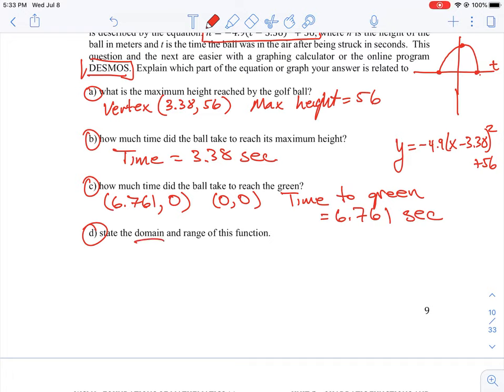We want to state the domain and range of this function. The domain is the values we can use on the x-axis, which is time. We can only really use numbers between zero and 6.76 seconds. If we write it correctly, the domain is less than 6.67 seconds but greater than or equal to zero seconds, because we're not taking values outside that range. It doesn't physically correspond to anything in terms of negative height.